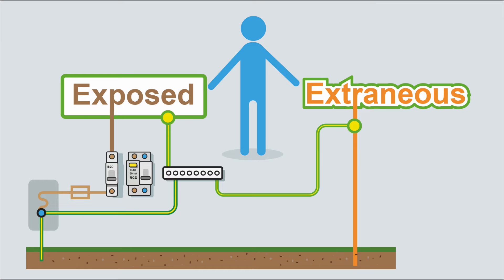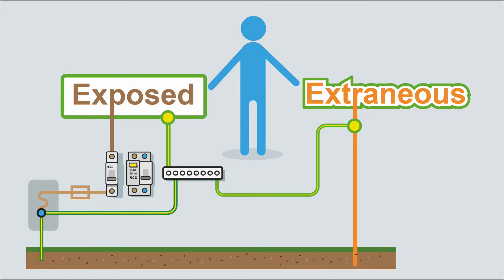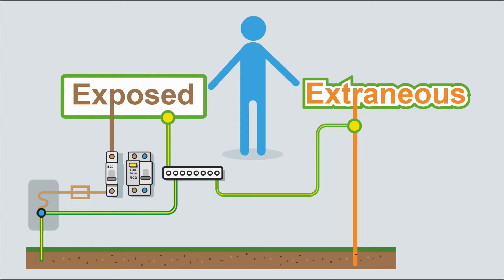I'll quickly go through extraneous and exposed conductive parts - I have got a video on this which I'll link to. An extraneous conductive part is a conductive part liable to introduce a potential, generally earth potential, and it doesn't form part of the electrical installation - that's your gas pipes, water pipes, steelwork and such. An exposed conductive part is a conductive piece of equipment which can be touched and which is not normally live but can become live under fault conditions - that's your electrical things: light switches, boilers, immersion heater, anything connected to the supply.